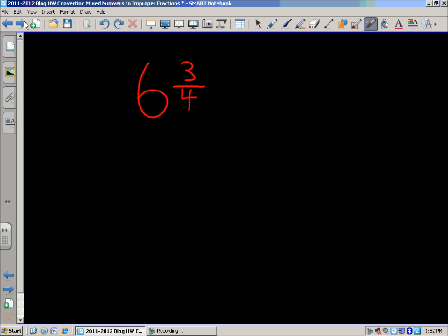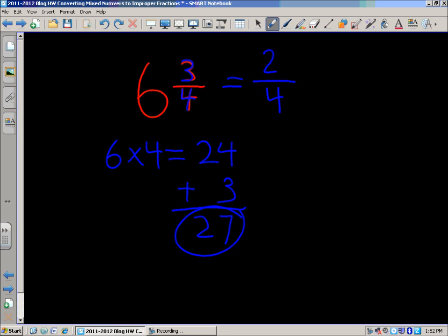6 and 3 fourths. So, we're going to multiply that whole number 6 times the denominator of 4. That will give us 24. And then we're going to add on that numerator up there. So, 24 plus 3 equals 27. And then we set that all over the denominator. The denominator stays the same from the fraction part of the mixed number. So, it'll be fourths. 27 fourths.